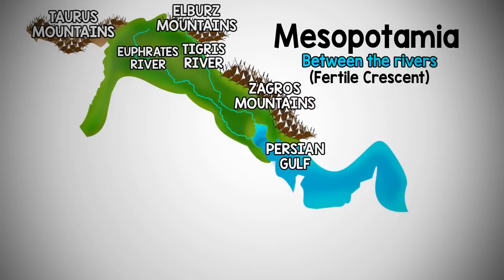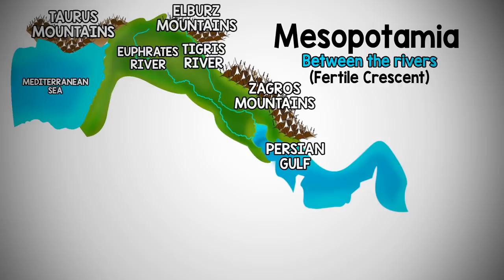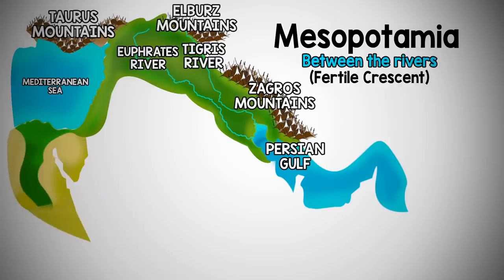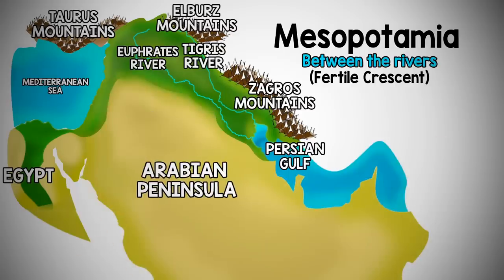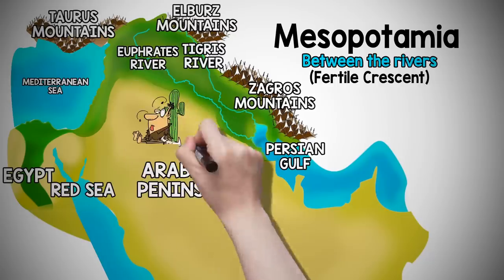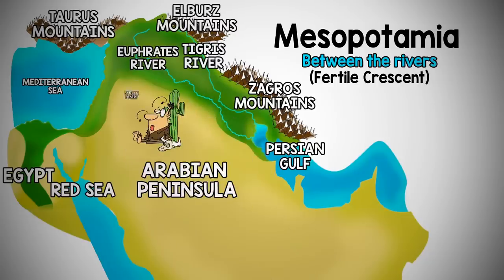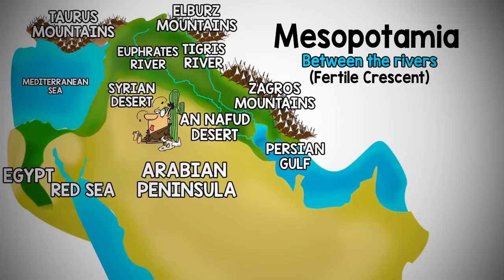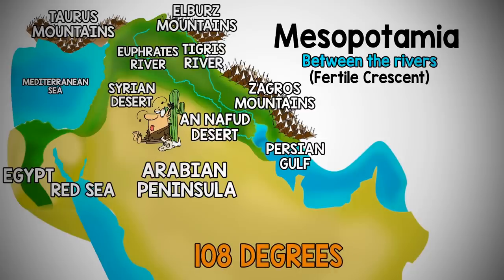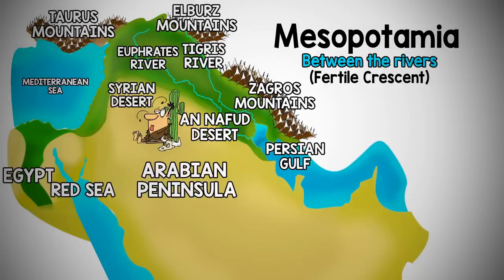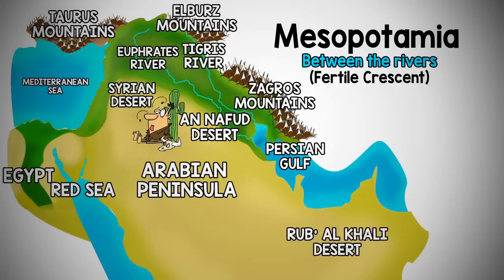The Zagros Mountains to the east separated Mesopotamia from Asia. To the west of Mesopotamia sat the Mediterranean Sea. The Sumerians first lived in Mesopotamia, and their trade neighbor Egypt sat southwest, separated from the Arabian Peninsula by the Red Sea. Mesopotamia offered abundant water amidst some of the hottest deserts in the world. The Syrian Desert and An-Nafud Desert reach up to 108 degrees and butt up against the southern banks of the Euphrates River. Over 250,000 square miles of the Rub al-Khali Desert stretch along the Indian Ocean and jut out into the Gulf of Aden to the east.